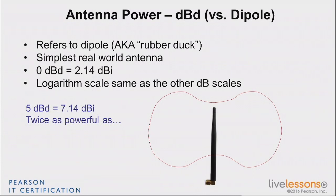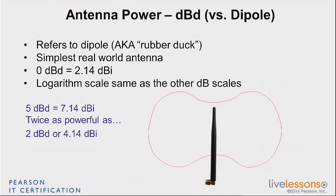So that's pretty simple. If you have a 5 dBd antenna, you can say: 5 dBd plus 2.14 equals 7.14 dBi. Either way is fine — as long as you know which scale we're talking about, you can move from one to the other. So a 5 dBd antenna is twice as powerful as what? Think about it. If you applied the rule of plus 3, you were right: it's twice as powerful as something that's 2 dBd. And because 5 dBd is 7.14 dBi, it's the same as saying it's twice as powerful as something which is 4.14 dBi. It's the same scale — we're saying the same number, just with a different reference.